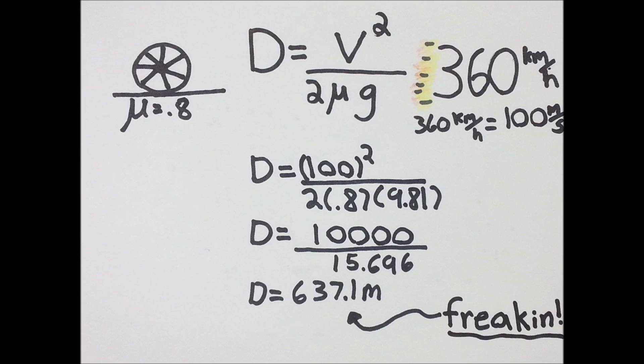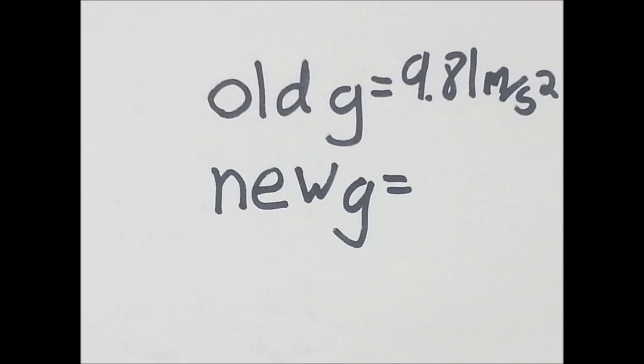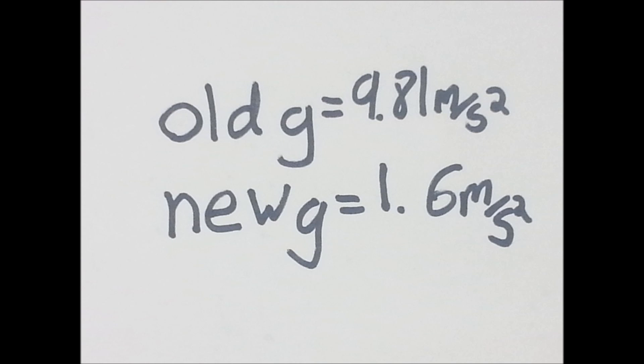But this is all on Earth. What if we were to go to the Moon? In the future, when we colonize the Moon, the acceleration in the formula would be changed from 9.81 meters per second squared to 1.6 meters per second squared, which drastically increases the stopping distance.